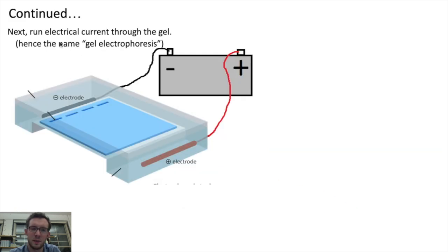So next, the biologist will turn the electrophoresis machine on by running an electrical current through it. They'll hook it up to a battery. And what running electricity through the gel causes to happen is it causes the DNA to start moving through the gel.